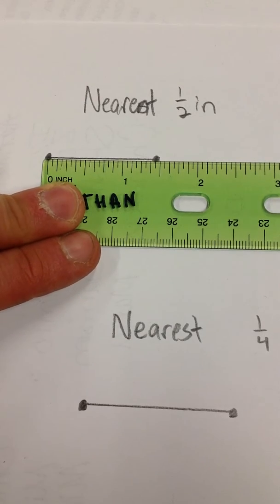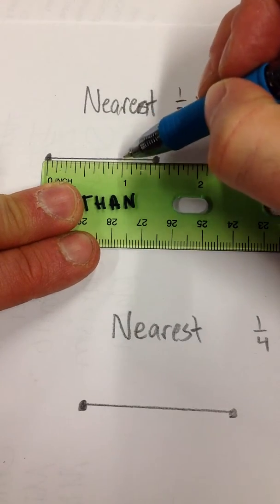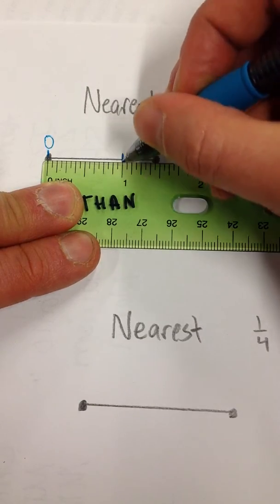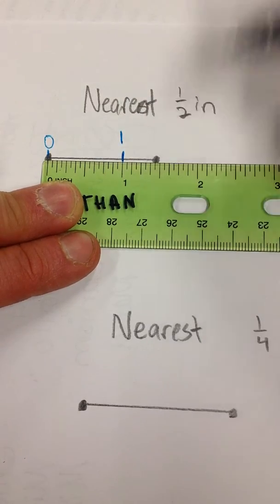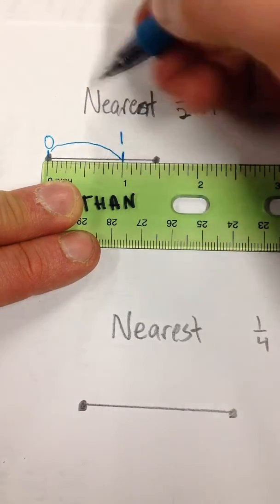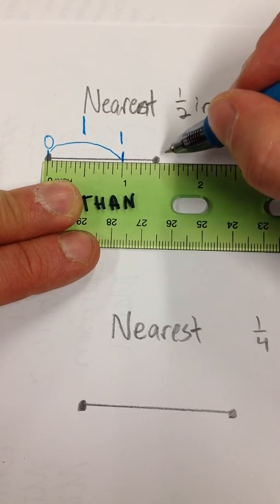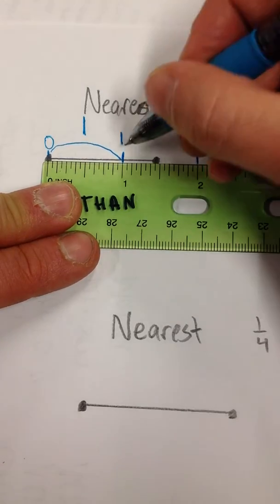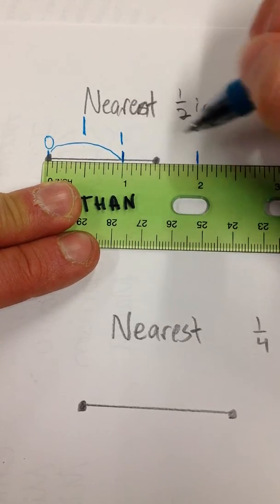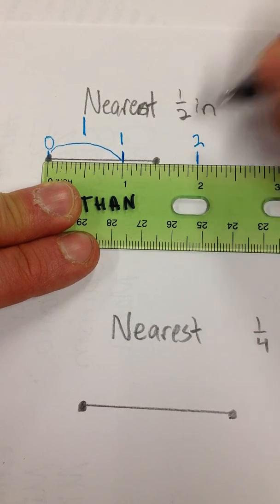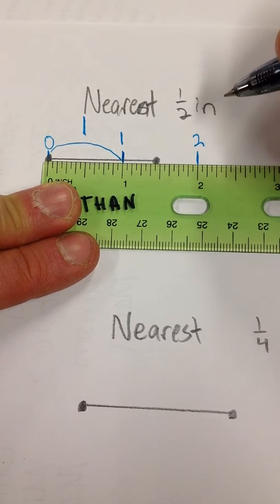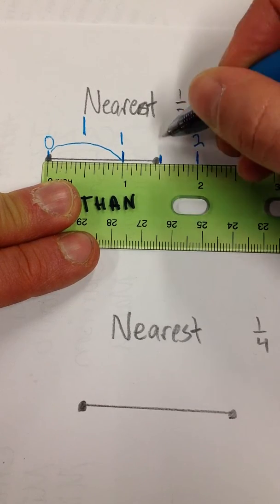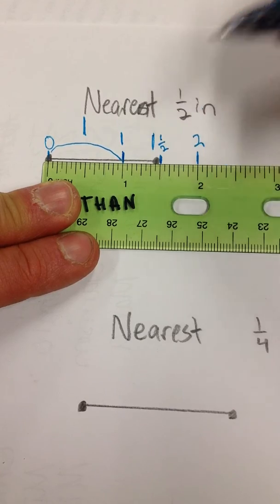Now the first thing I notice is this is a pretty long line segment. It's longer than one inch. If this is my zero inch marker and this is my one inch marker right here, I know that it's longer than an inch. So I have one inch and a fraction. The question is, what's the fraction? We're going to get to the nearest half inch. So let's label our halves. Here's one. Where's two? Right here. And where's one and a half? Right there.